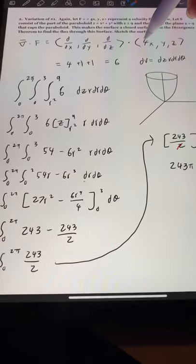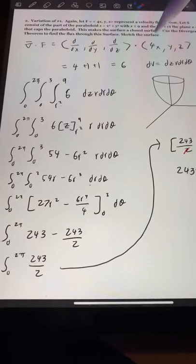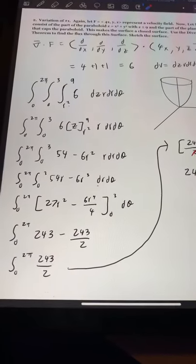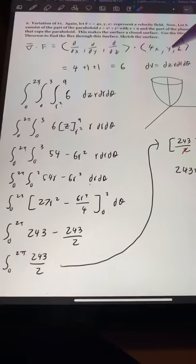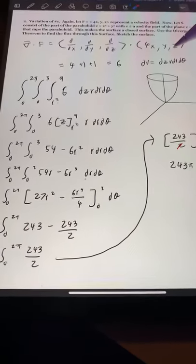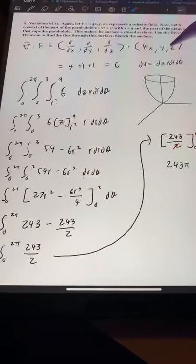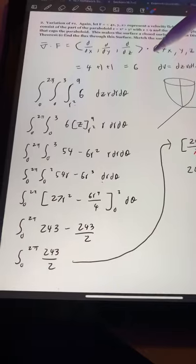The derivative of 4x with respect to x is 4. Derivative of y with respect to y is 1. And derivative of z with respect to z is also 1. And we add them together to get 4 plus 1 plus 1, which equals 6.